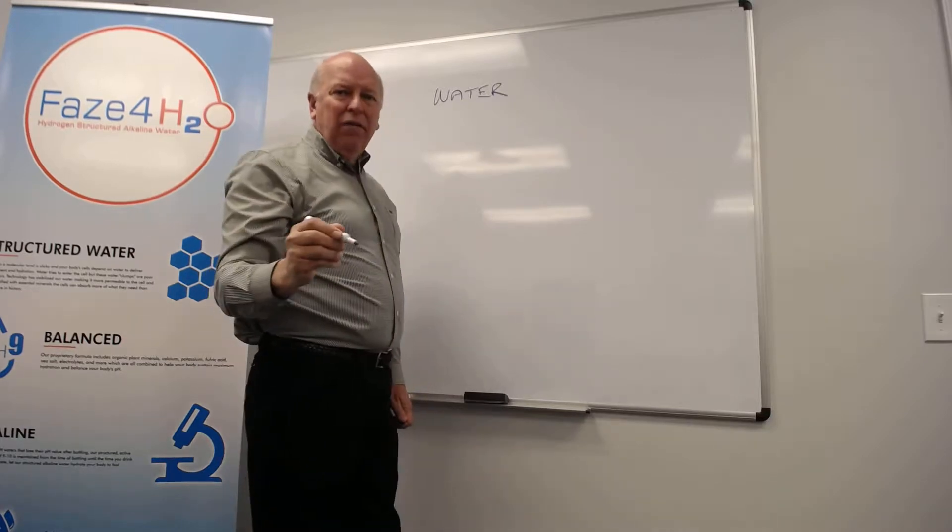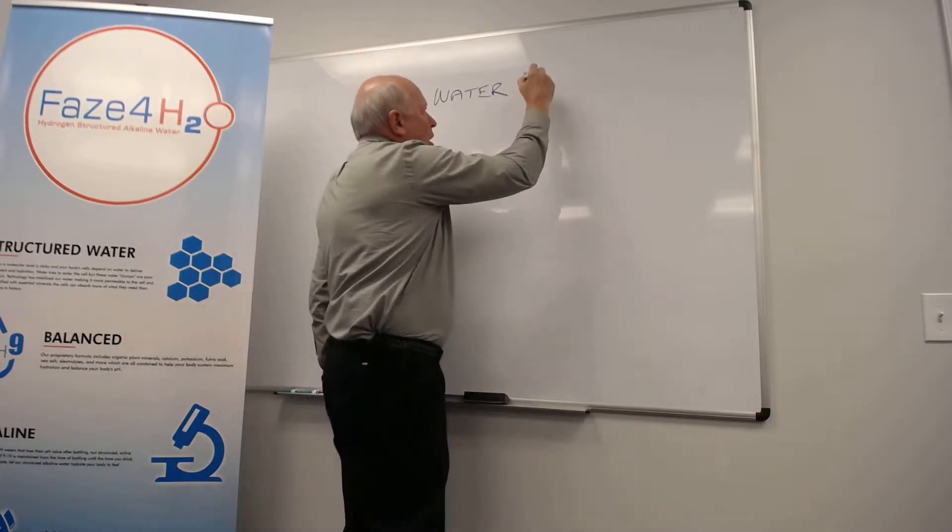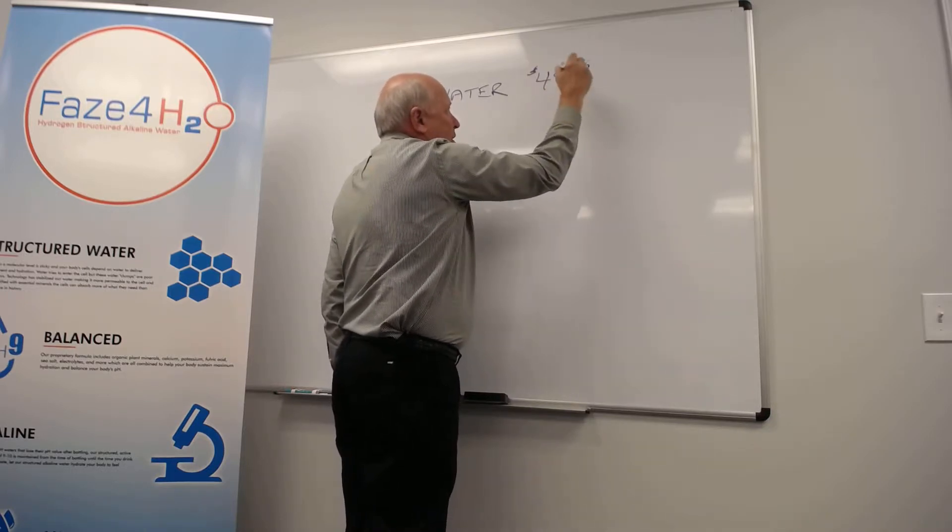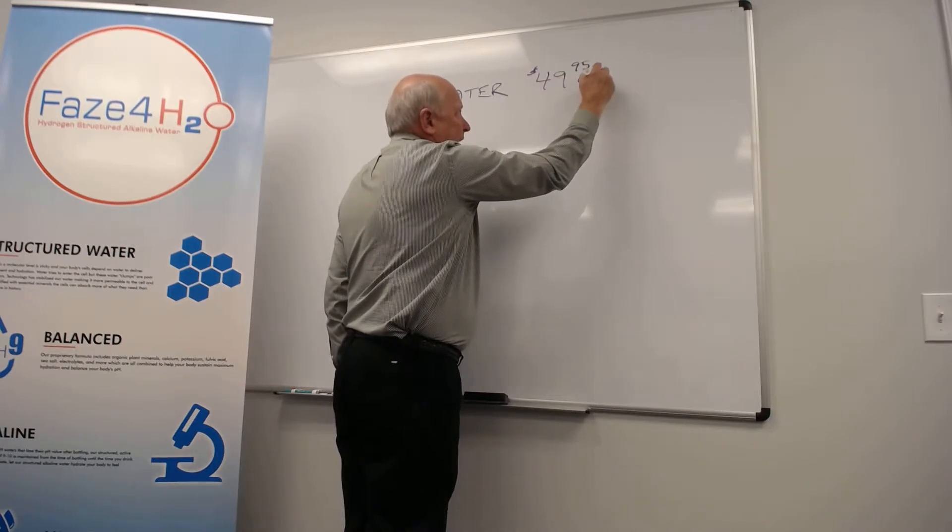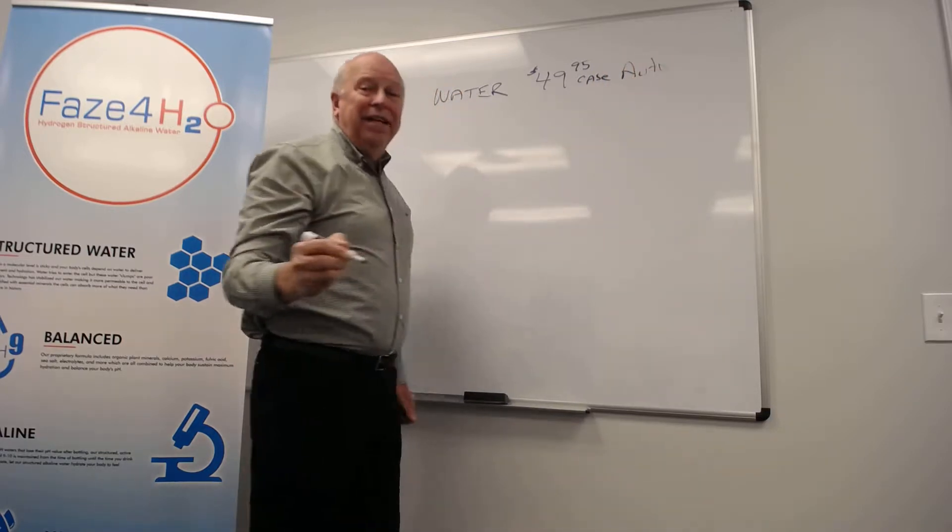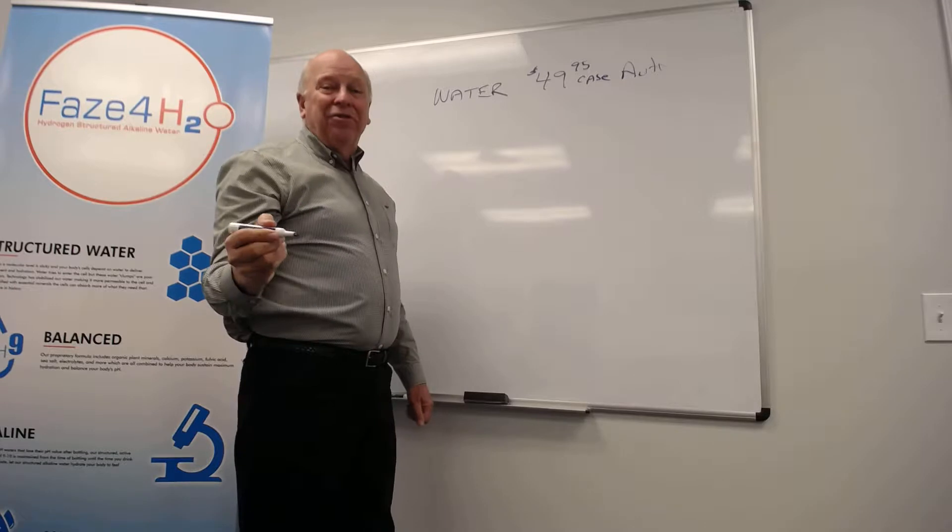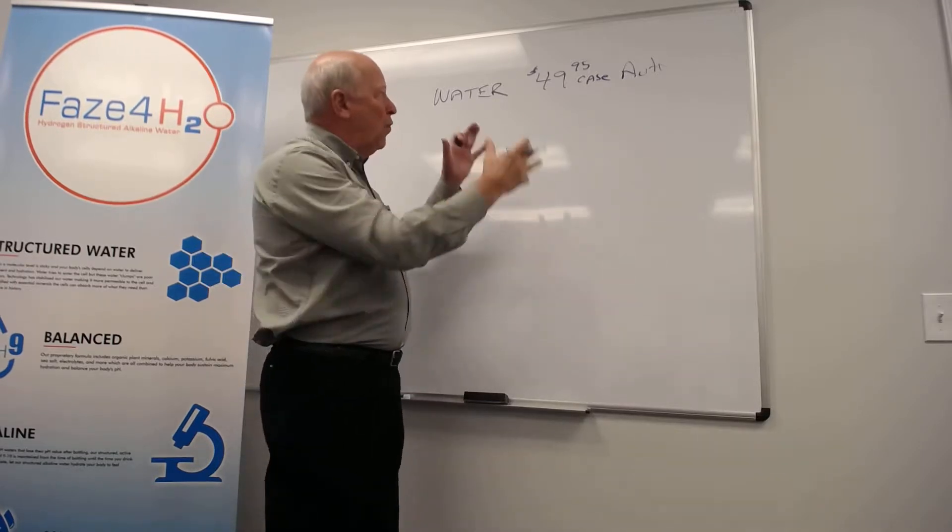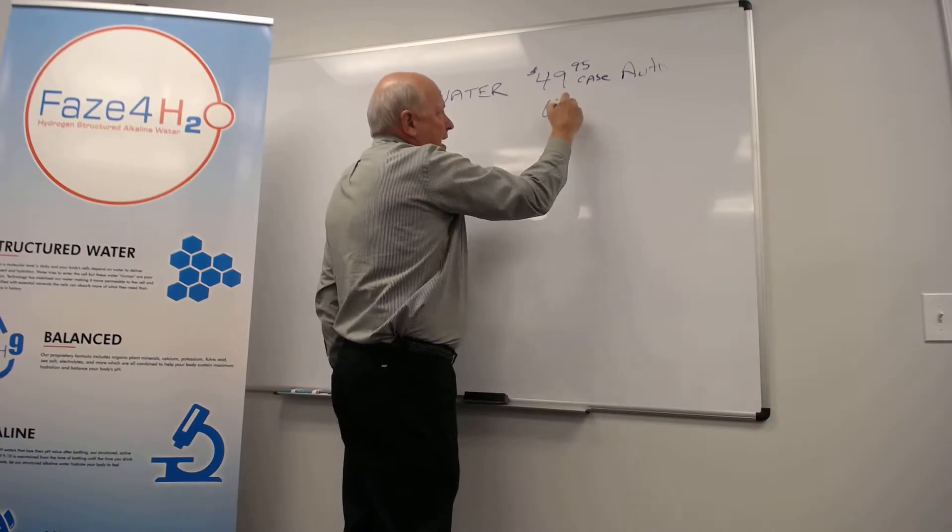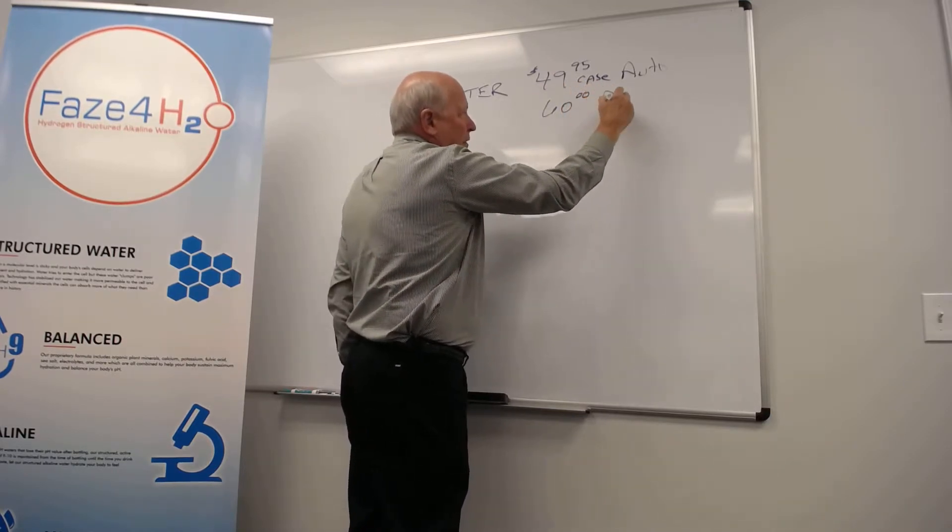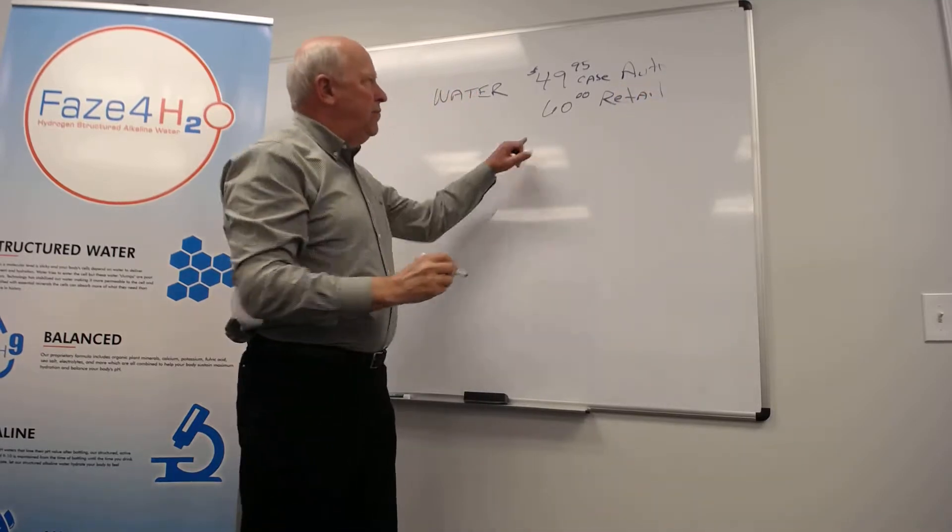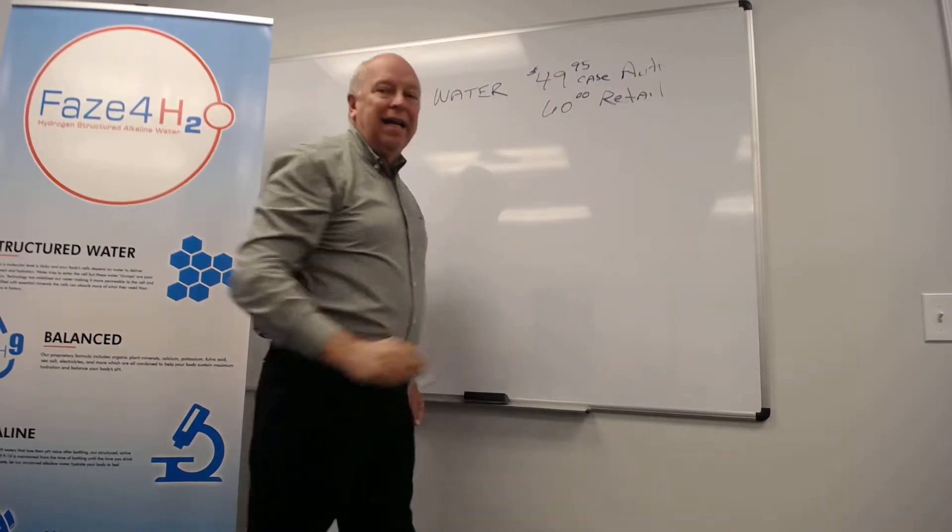Right now, the new price of our water on AutoShip is $49.95 per case. And that's on AutoShip. Now, that's a heck of a deal. That is $11 away from having two cases of water. This is for one case, $49.95, and it's $60 retail. So if the people don't want to be on AutoShip, they pay $60 for retail or $49.95 a case.